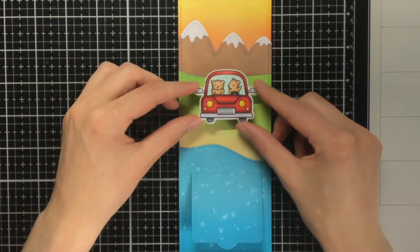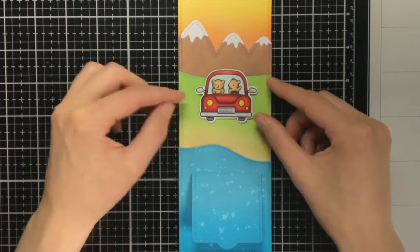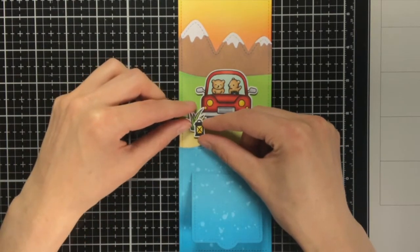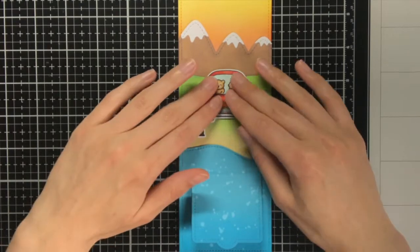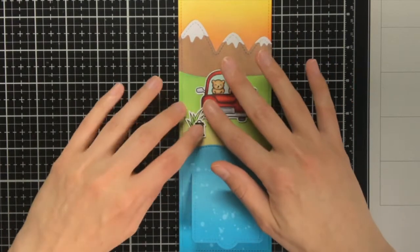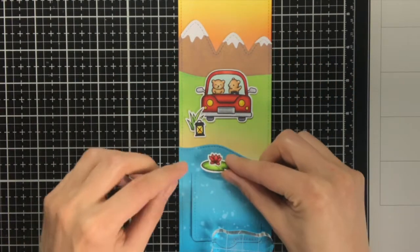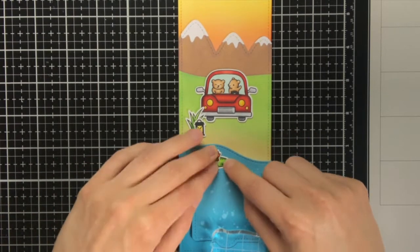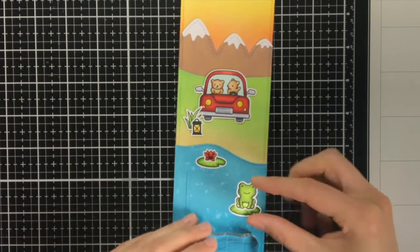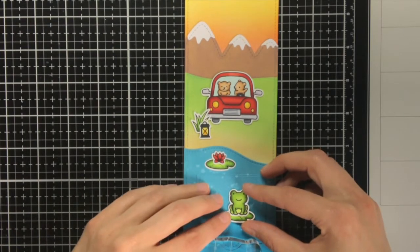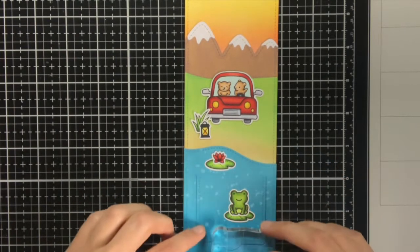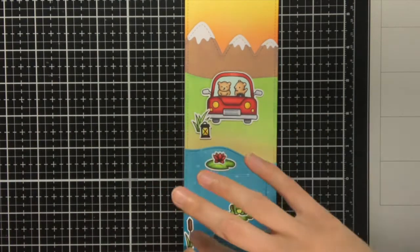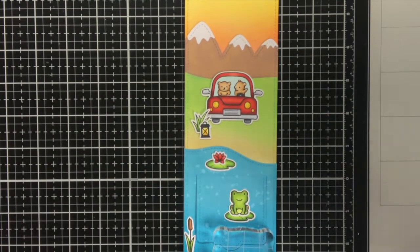For adhering the critters to the card I am going to use foam squares and also tacky glue, so for the car and also for that cross and lantern I am using foam squares to give it some dimension, and for the other elements I am going to use the tacky glue. And I always like that this also adds some interest to the card, when you do not pop everything up or adhere everything flat to the card base, it is nice when there is some variation in the dimension.